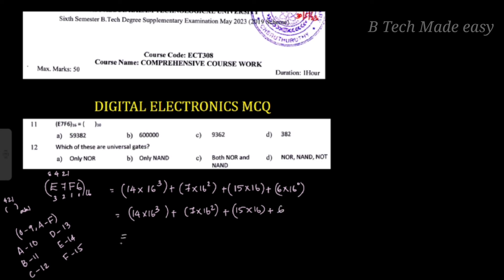Now we solve. The answer is 5, 9, 3, 8, 2. That is to the base 10. E7F6 to the base 16 is equal to 59382 to the base 10. Okay, that is simple.